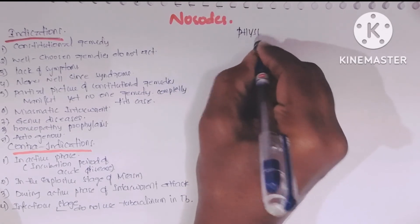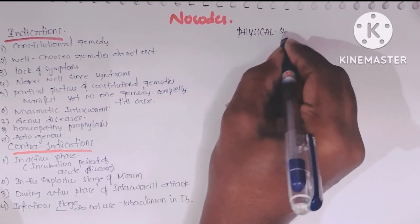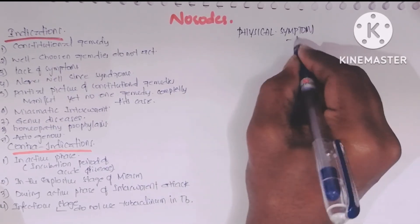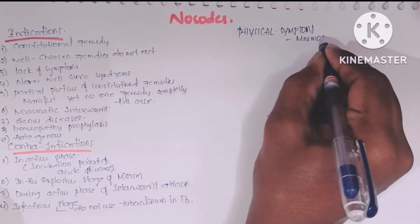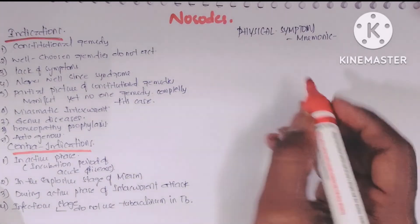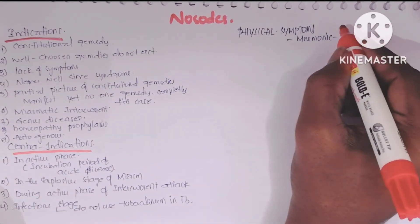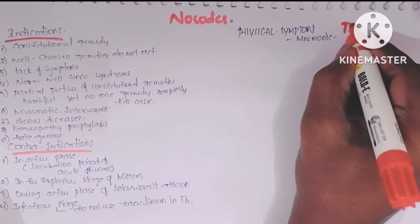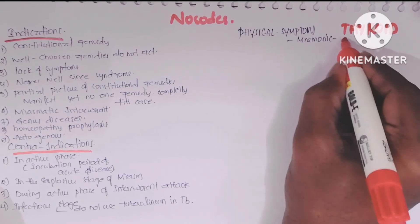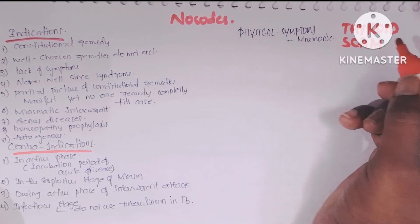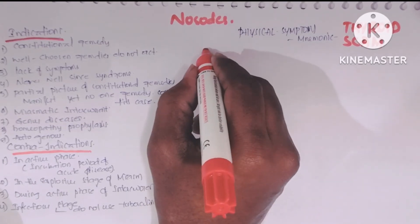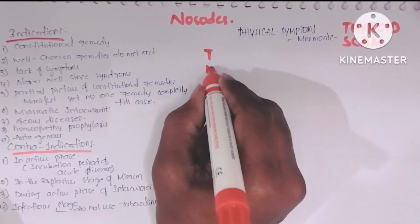Now coming to the physical symptoms of nosodes: How to remember them? Just remember the mnemonic TYRIDE SCAM.